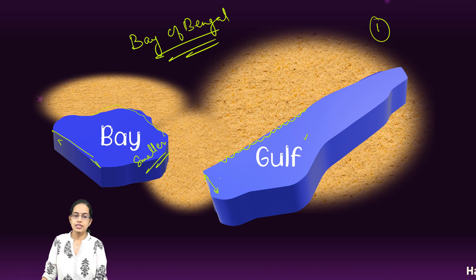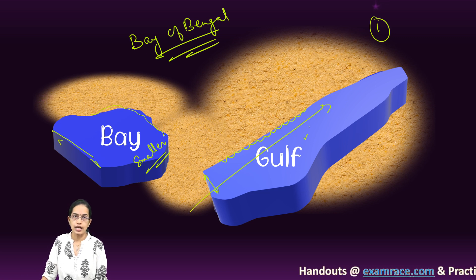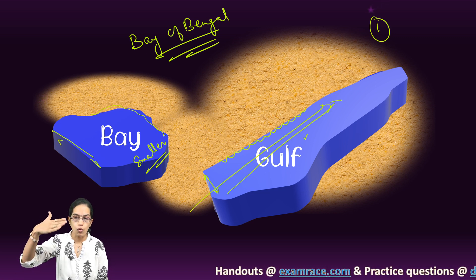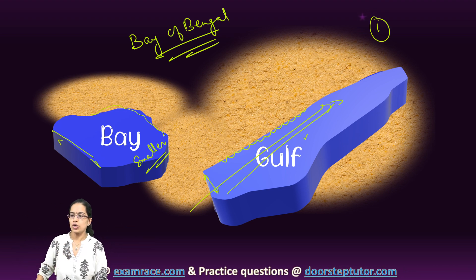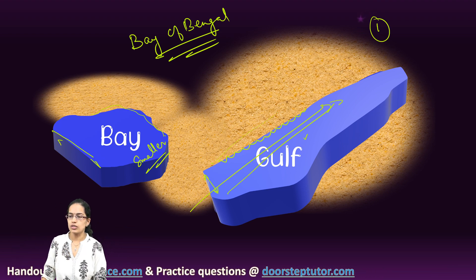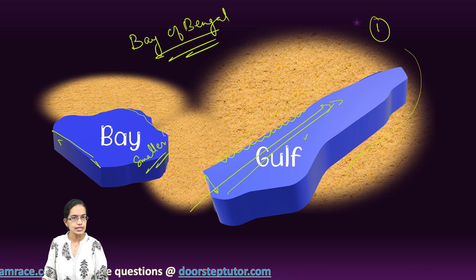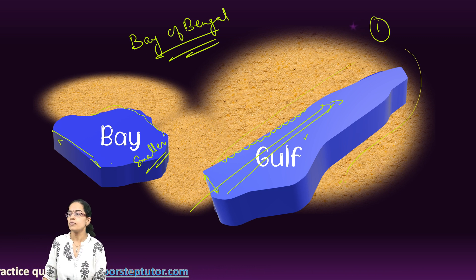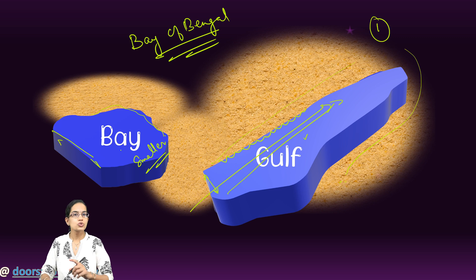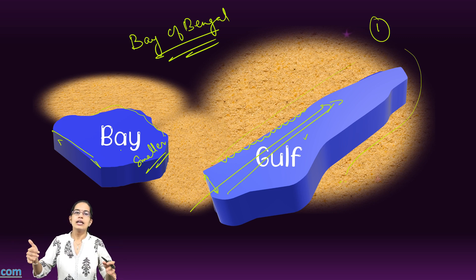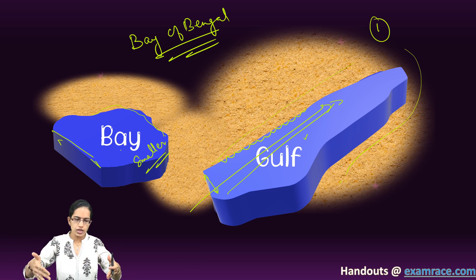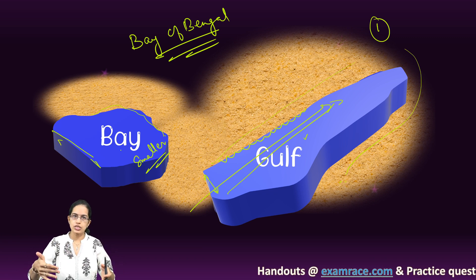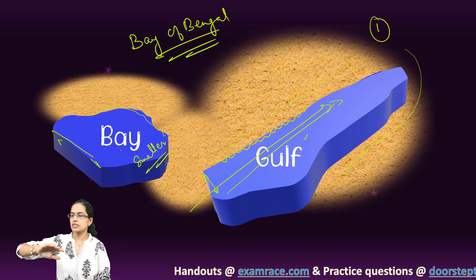Another major difference is in the Gulf, you have water that deeply erodes the land and therefore it is more in depth and it is enclosed by the land. As you can see on three sides, you have land at a Gulf. However, a Bay is usually not enclosed by land — it's just a kind of inward extension.